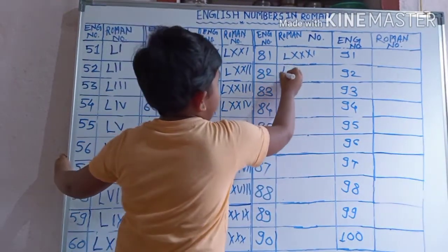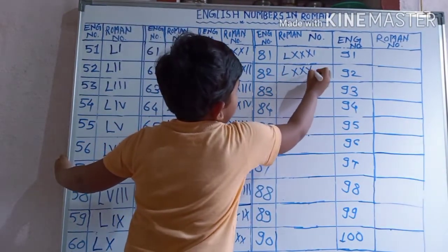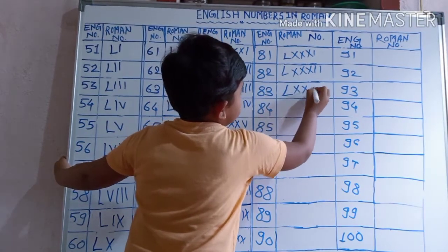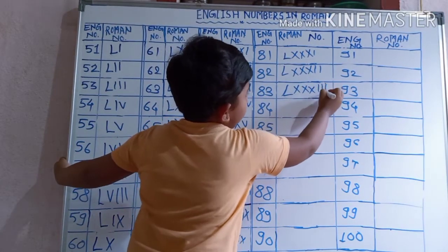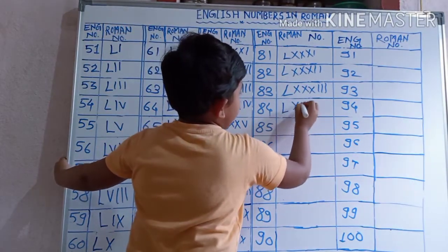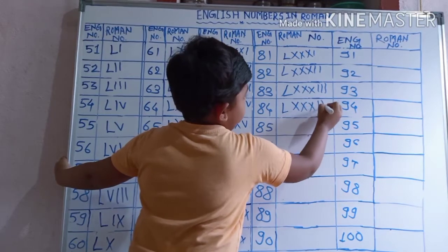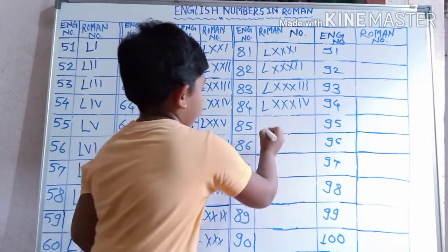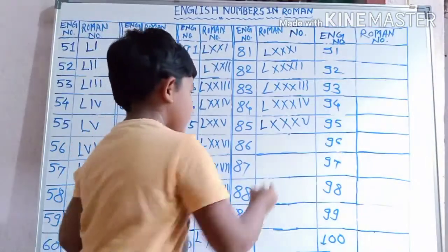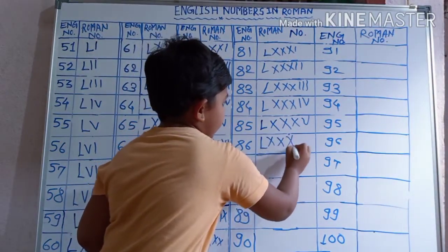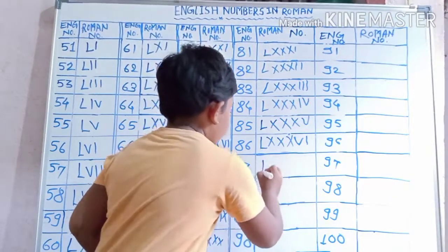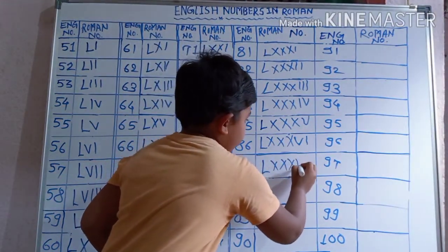82: L, X, X, X, I, I. 83: L, X, X, X, I, I, I.